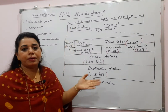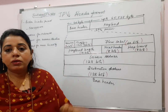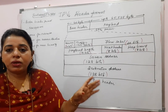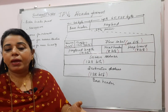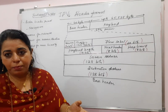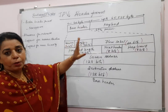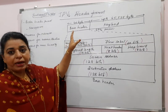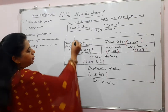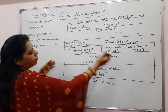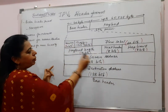In IPv4, the base header is in the range of 20 to 60 bytes — 20 is the minimum required in IPv4, plus the remaining 40 can be options. But in IPv6, the word 'options' does not appear at all. It is completely 40 bytes base header, as shown in this expanded diagram.